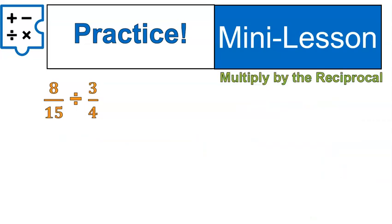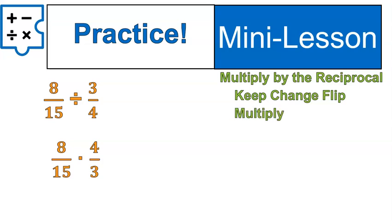A little bit more practice. Try it out. Pause and practice. We keep change flip. That's going to be our first multiplication question there, or the way we multiply it. We flip the second fraction. We change the division symbol to multiplication. 8 times 4 is 32.